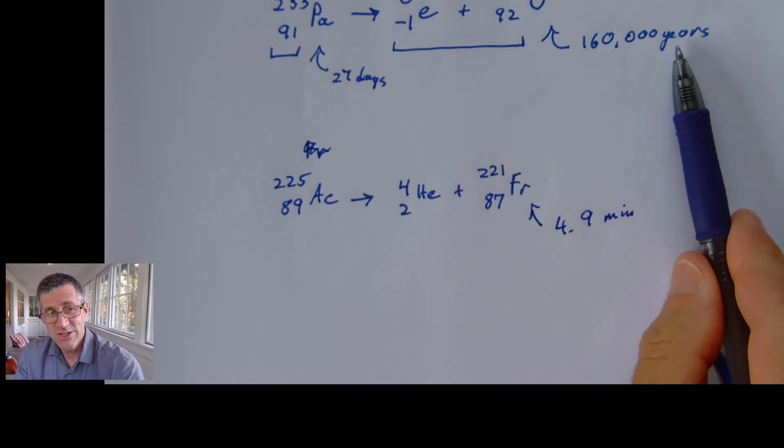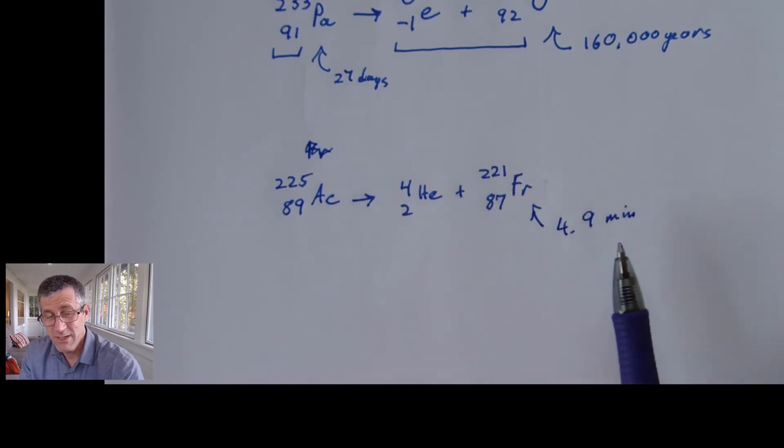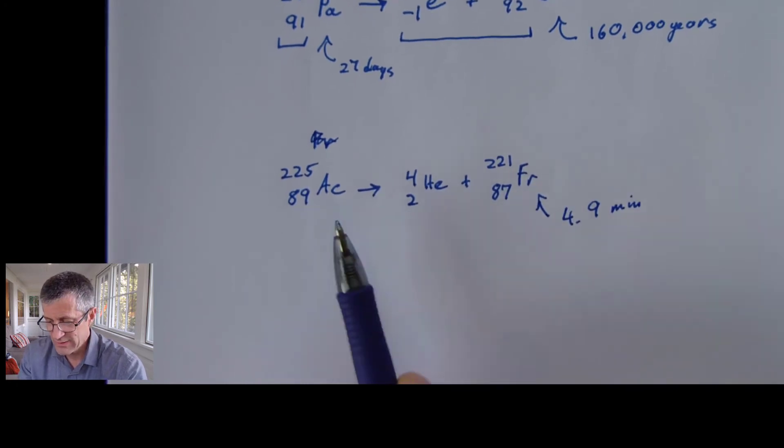So uranium, 160,000 years, it's around forever. Protactinium, 27 days. And this one is 4.9 minutes. It doesn't last long at all. It decays into something else. Actinium is around 10 days, it turns out.